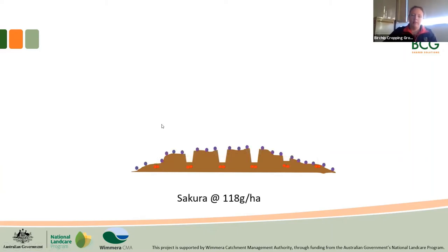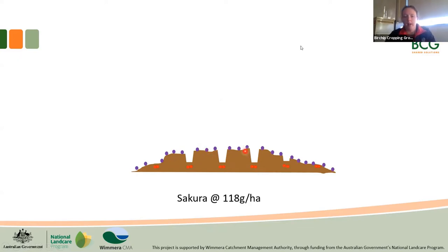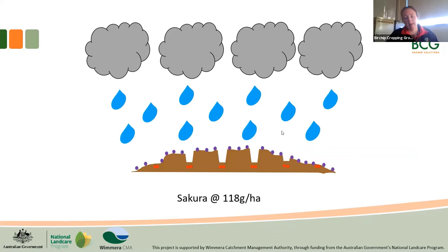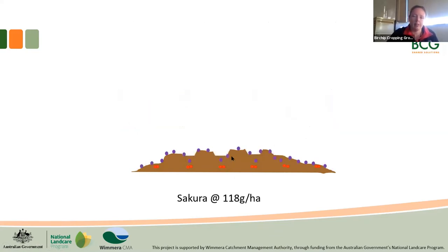Another issue with the furrow slumping was that prior to sowing we'd applied Sakura at label rate — 118 grams per hectare — as a pre-sowing pre-emergent application. In a press-wheel sowing system you spray before you sow, and as you sow through it the tines push the soil up and out of the furrow, leaving the herbicide away from the crop. However, when we got the 35mm of rain, the herbicide attached to the soil slumped back into the furrow along with the soil, meaning those deeper-sown crops were not only emerging from greater depth but were also trying to grow up through the herbicide — which isn't ideal.